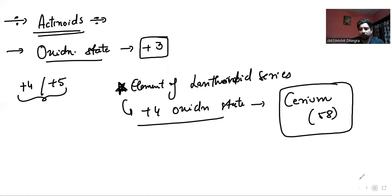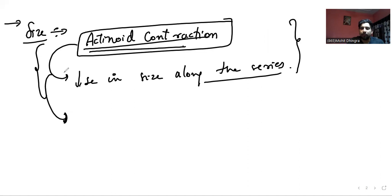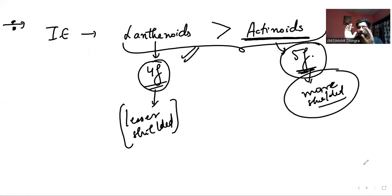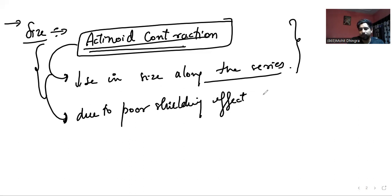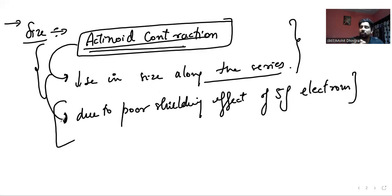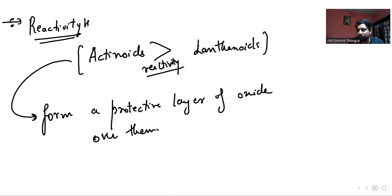One thing to explain here is why actinoid contraction is seen. The 5F electrons also have poor screening effect, but as compared to 4F electrons, they have higher shielding effect. Actinoid contraction happens due to the poor shielding effect of 5F electrons, and lanthanoid contraction happens because of the poor shielding effect of 4F electrons. But comparing the two, 4F has more poor shielding effect than 5F.